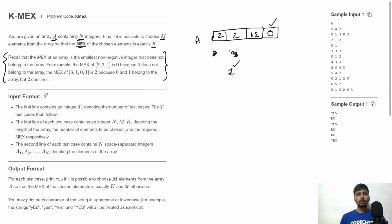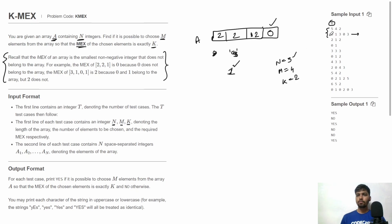Now let's see the input and output structure. First we have the total number of test cases. For each test case, the first line gives us N, M, and K. Here N is the size of the array, M is the number of elements we need to select from the array, and K is the target MEX value we need to achieve after selecting those M elements.